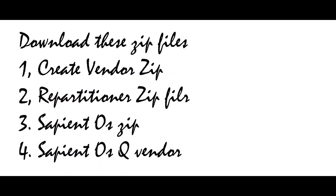Make sure that you have downloaded these four zip files. First is the create vendor zip file, which helps you create vendor partitions. Second is the repartitioner zip file, which helps you increase your system size. Third is the Sapient OS zip file, and fourth is the Sapient OS Q vendor zip. All the links are given in the description box.